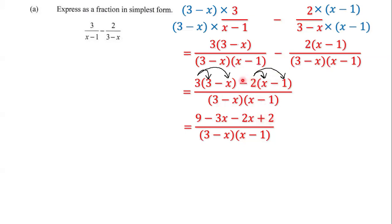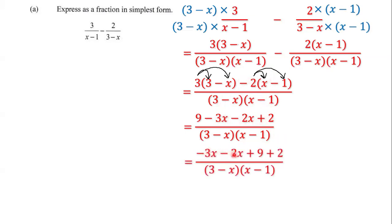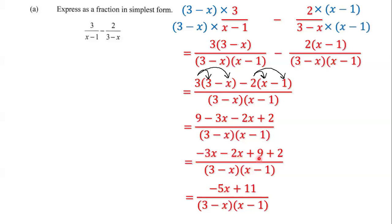Next we group the like terms: negative 3x minus 2x, and 9 plus 2. Negative 3x minus 2x is negative 5x, and 9 plus 2 is 11. So we have negative 5x plus 11, all over (3 minus x) multiplied by (x minus 1), and that's the answer to this question.